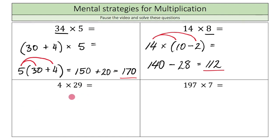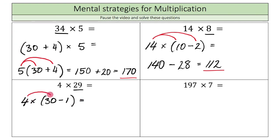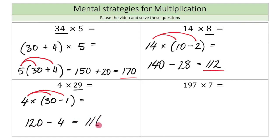Next: 4 times 29. I'll break 29 as 30 minus 1, so it's 4 times (30 minus 1). Distributing the 4: 4 times 30 — since 4 times 3 is 12, adding the zero gives 120 — minus 4 times 1 is 4. So 120 minus 4 equals 116.